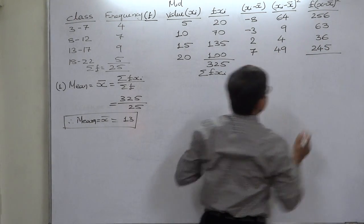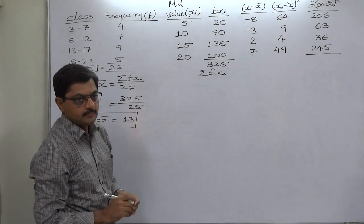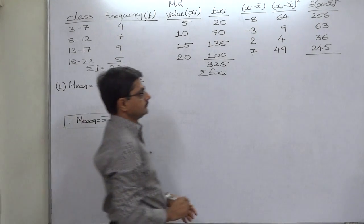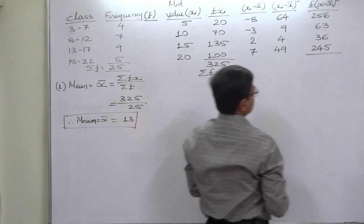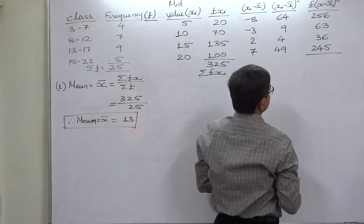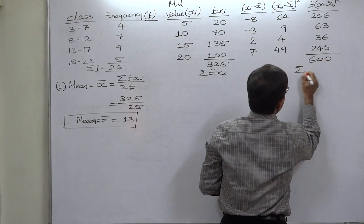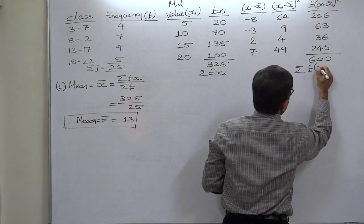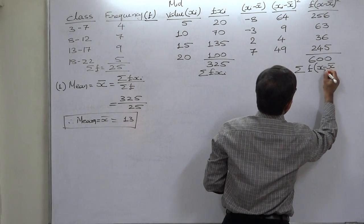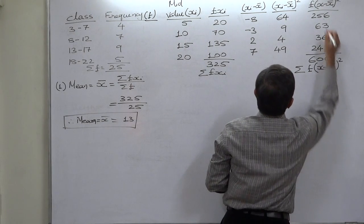Now summation of this column only. It is 600. This is sigma f into x minus x bar the whole square.